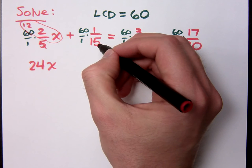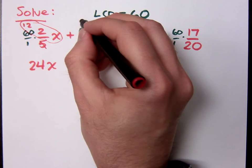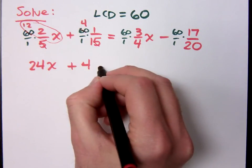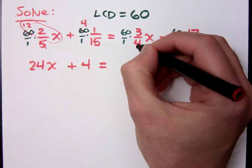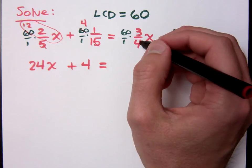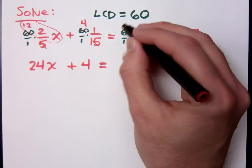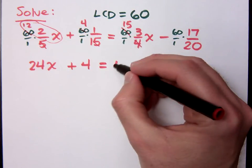And then what about this guy? 15 goes in here, I get 4. So 4 times 1 is 4. What about here? 45x. 4 goes into 60 15 times, so I get 45x.